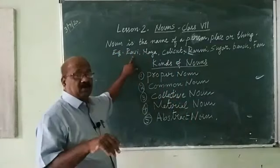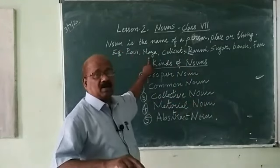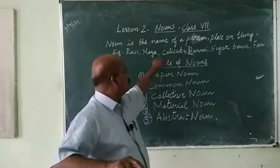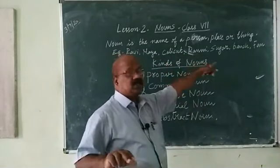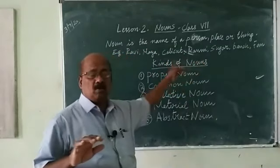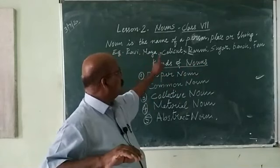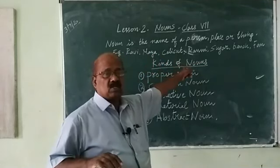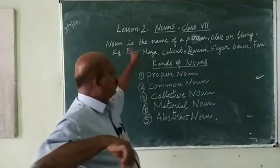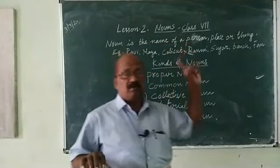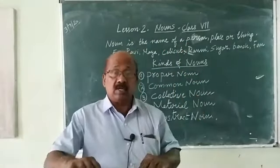For example, look at the board. Ravi — name of a person. Maya — another person. Calicut, then Rami — places. Sugar, bench, fan — things. So, here we get examples of names of persons, names of places, names of things. Simply we can say: nouns are the name of a person, name of a place, or a thing.